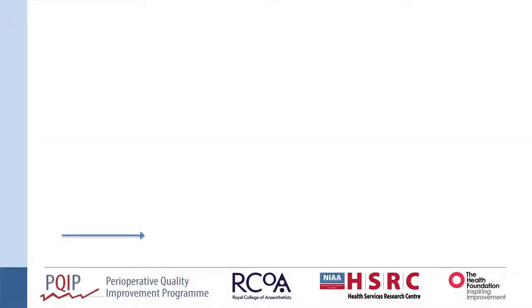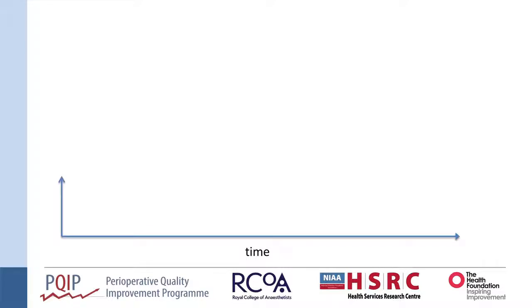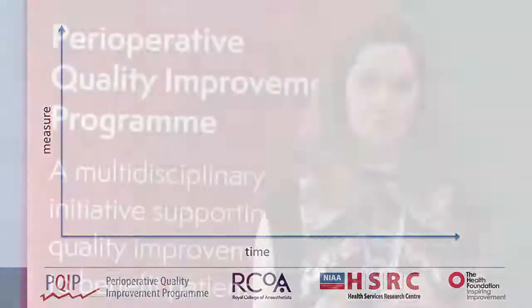Run charts are exactly what they say on the tin — they are a chart that is running through time. You start off with an x-axis which is always time, and the units can be anything you want: seconds, hours, minutes, mornings, weeks, eons — whatever is important to you and your improvement projects. Then you add to your y-axis the measure you have chosen, for example theater start times, percentage of a target achieved, or patient satisfaction rates.